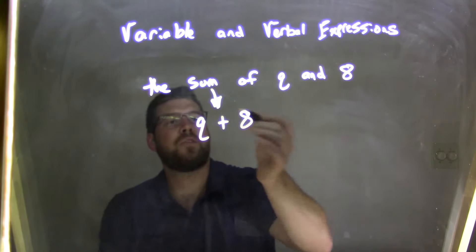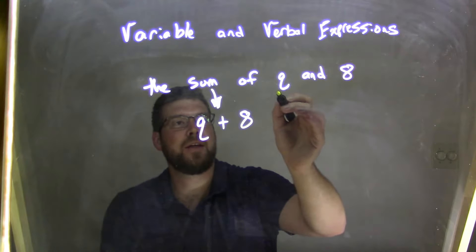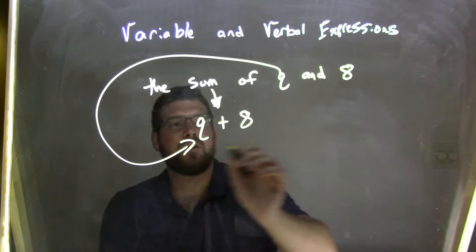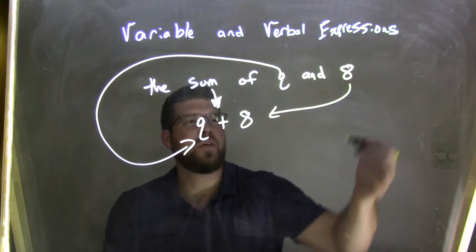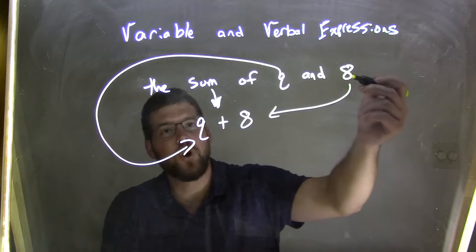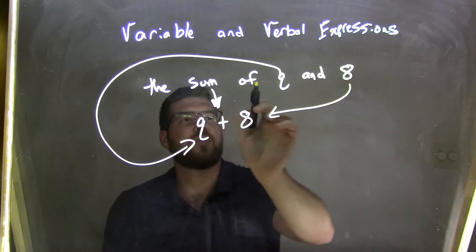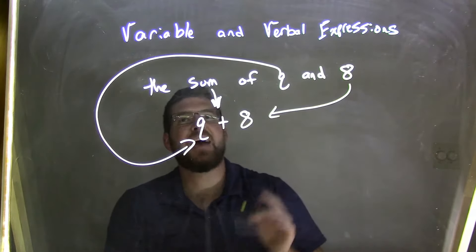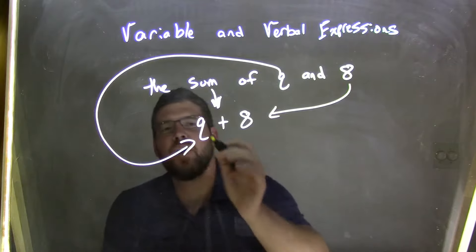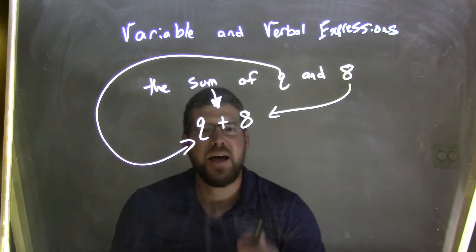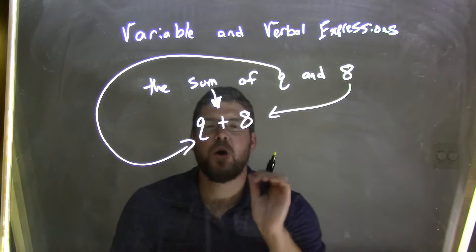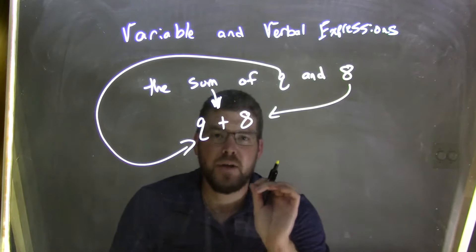So again, I'm writing the sum. Q coming down here, let's bring it this way. There's the Q, and then there is the 8. We start with our verbal expression, the sum of Q and 8, and we convert that to our variable expression: Q plus 8. Again, the key thing here: knowing that sum is addition.